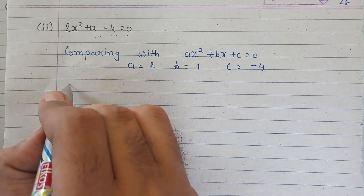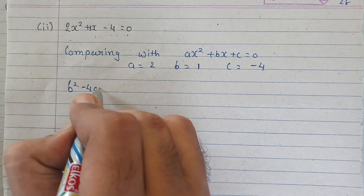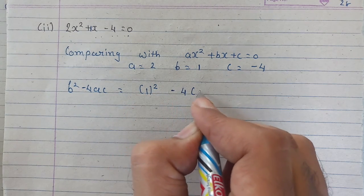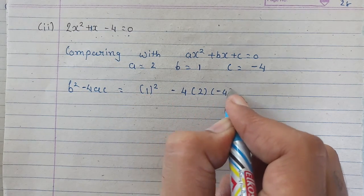and c is minus 4. So a, b, c are found. Now let's find b square minus 4ac. And that will be 1 square minus 4 into 2 into minus 4.